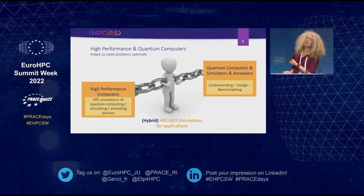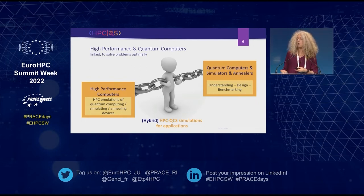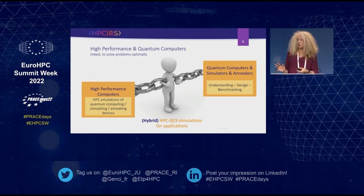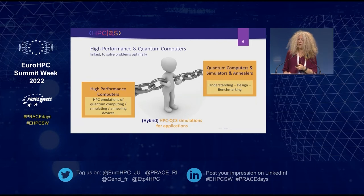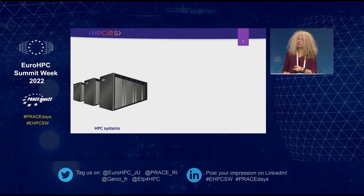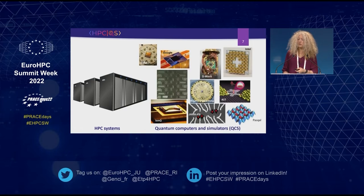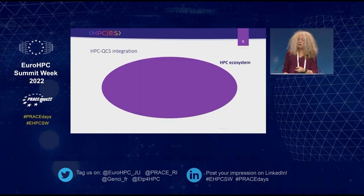Our HPC systems play a very important role in benchmarking: they tell us what to expect from a quantum computer. We can simulate quantum computers with about 50 qubits on our largest systems — a good benchmarking tool. Ultimately we want to arrive at hybrid HPC-QCS simulations for applications, which means connecting our HPC systems with one or more quantum computing and simulating systems.